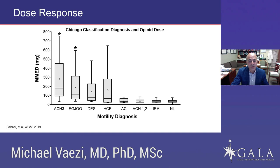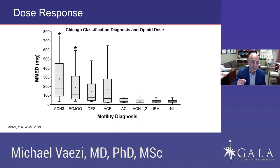This is a new recognition — previously, patients would present to the manometry lab and there would be less focus on whether patients are on chronic opioid use. Now we are highly focused on that, because we recognize this is an exogenous factor leading to similar diagnoses as idiopathic achalasia. That's important because our treatment may be different in the two conditions.